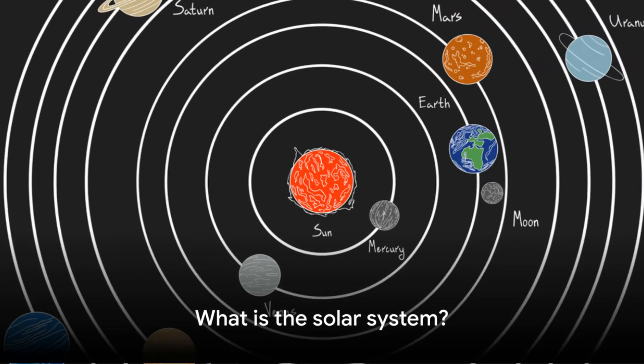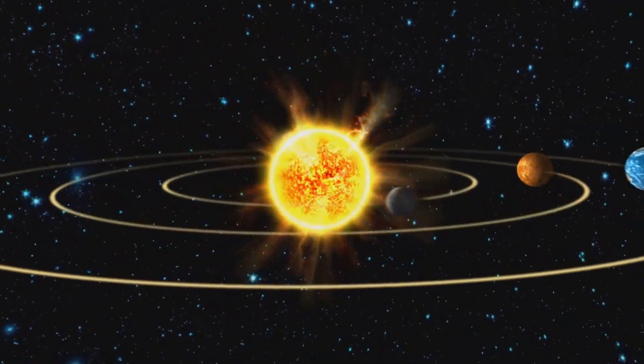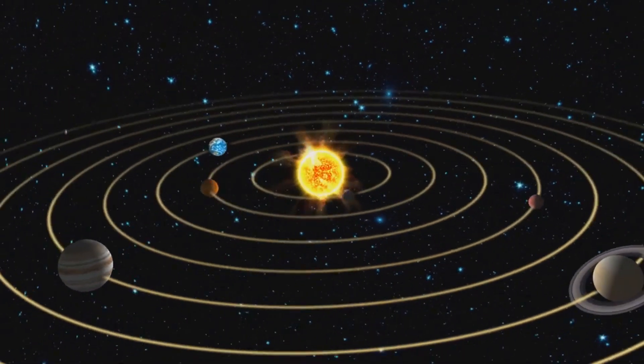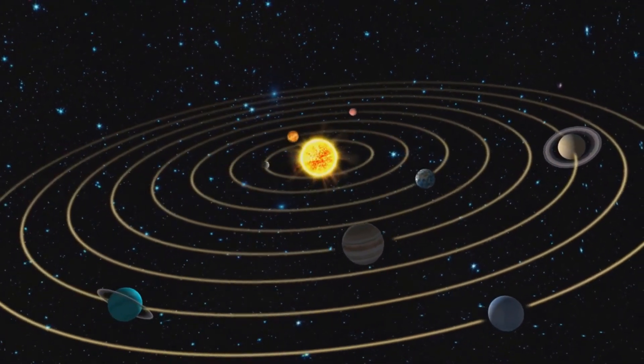The solar system is a collection of planets, moons, asteroids, comets, and other celestial bodies that orbit around the sun. It is located in the Milky Way galaxy and is estimated to be about 4.6 billion years old.